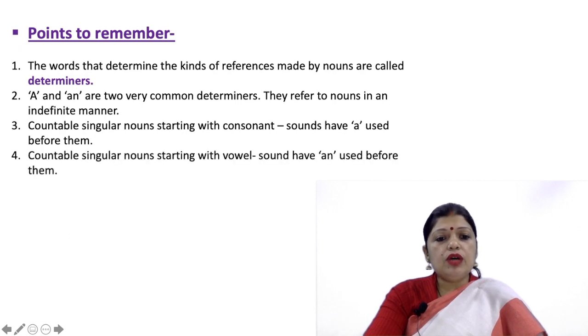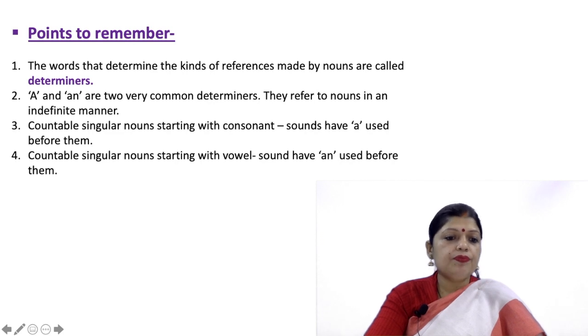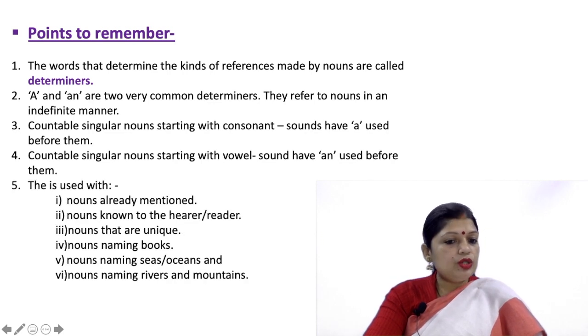Countable singular nouns starting with vowel sound have An used before them. The is used with nouns already mentioned, nouns known to the hearer or reader, nouns that are unique, nouns naming books, nouns naming seas or oceans, and nouns naming rivers and mountains. You have to remember these points children.